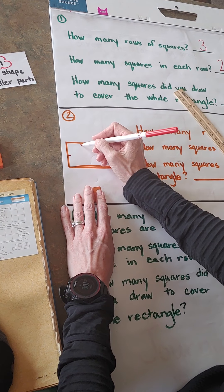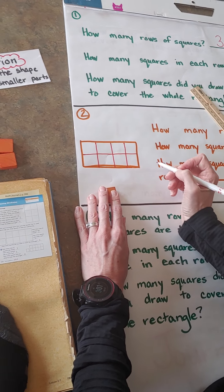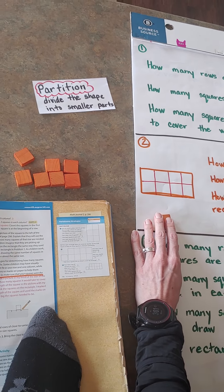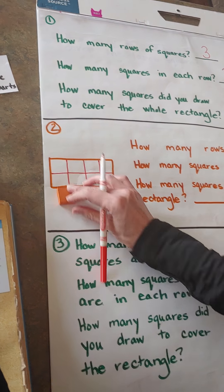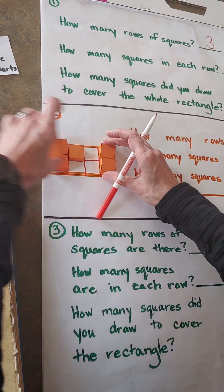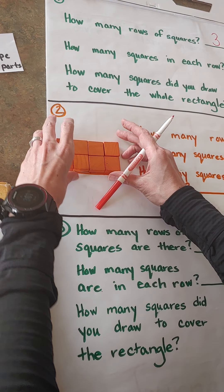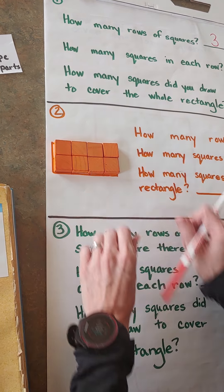And then I'm just going to draw it down. Remember, what's that fancy word we're doing here, friends? Partitioning. We're partitioning this rectangle. How many rows of squares are there? Sometimes I still like my manipulatives — I'm going to put those back on here so you can see. How many rows of squares are there? One, two — two rows of squares.